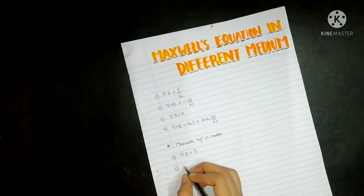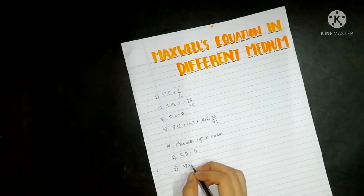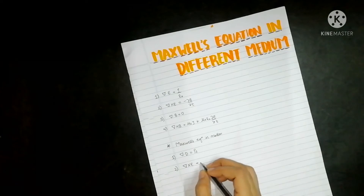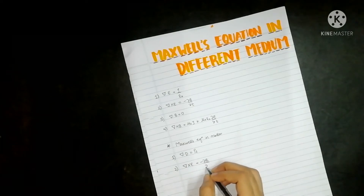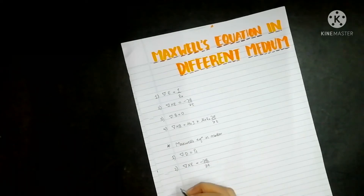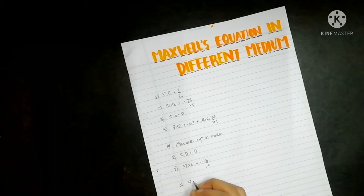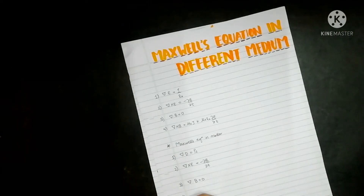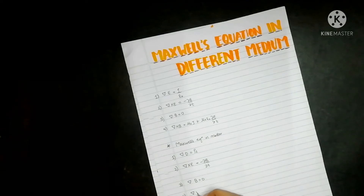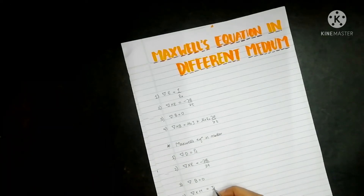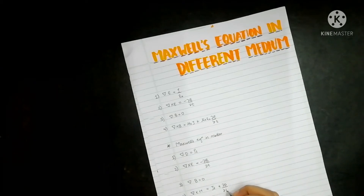The second equation is: del cross E is equal to minus dou B by dou t. The third equation is: del dot B is equal to zero. The fourth equation is: del cross H is equal to J_f plus dou D by dou t.